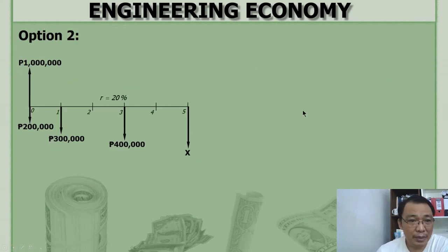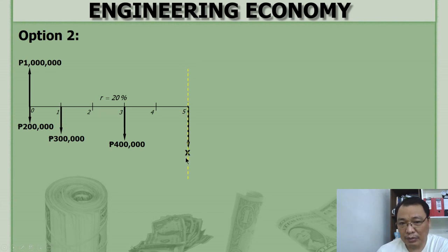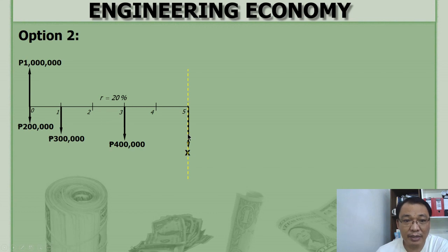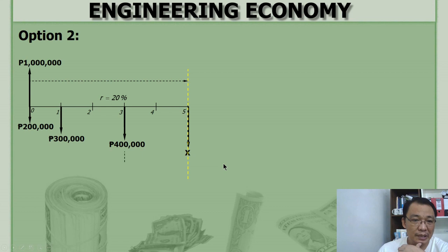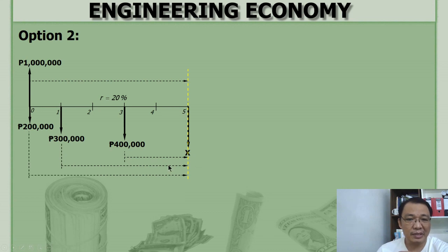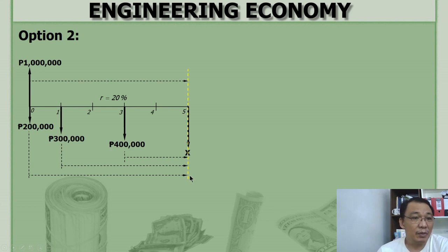The second option uses year 5 as the focal date. All payments are projected forward to year 5. The 1,000,000 is projected forward, and the installment payments — 200,000, 300,000, 400,000, and X — are also projected to year 5. Since X coincides with the focal date, it has no factor. The equation sets the sum of X plus the future values of the other installment payments equal to the future value of 1,000,000.